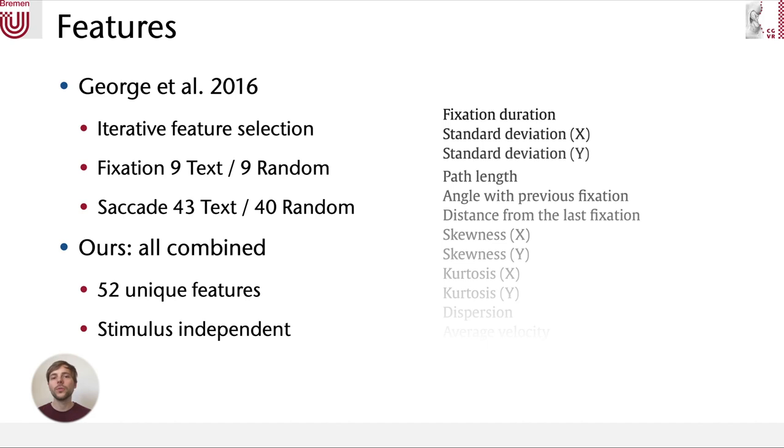For the features, we start with the same set of features as they were used by George et al. They proposed an iterative feature selection scheme to find the best features for fixations and saccades. They also made it depend on the input stimulus and then found 9 features for fixations and 43 to 40 for the saccades. In our work, we found that when we use all features, regardless of whether it's in a fixation or a saccade, or the stimulus is text or random dot, works better.